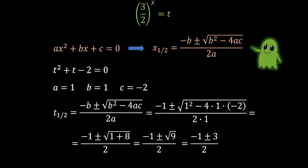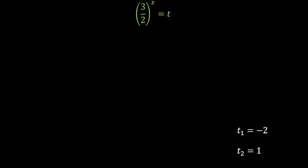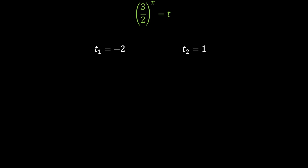From here we will have two possible solutions. The first one is minus 1 minus 3 over 2, which is minus 4 over 2, so the first solution is t equals minus 2. The second solution is minus 1 plus 3 over 2, giving t equals 1. So we have two possible solutions for t: minus 2 or 1.